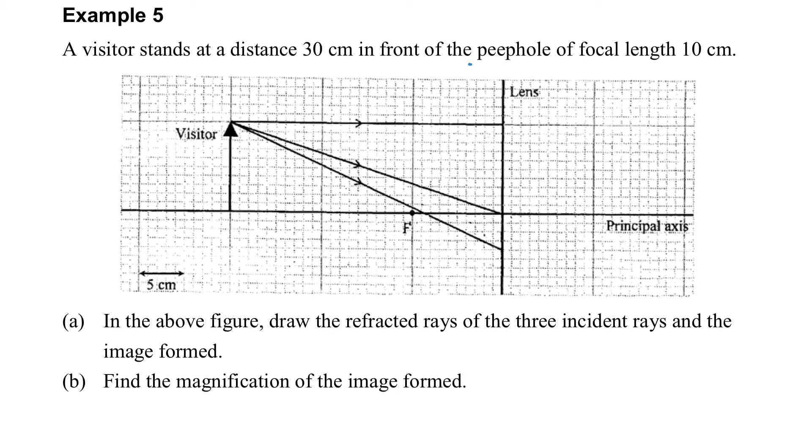Let's look at two examples about the concave lens. How do we know example 5 is talking about the concave lens? Because it says that it is a peephole. So we know that we will use the concave lens as the peephole.